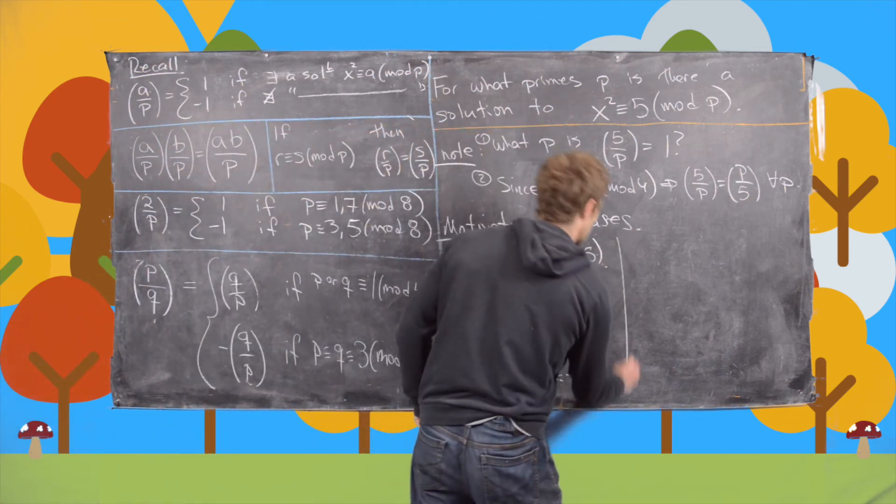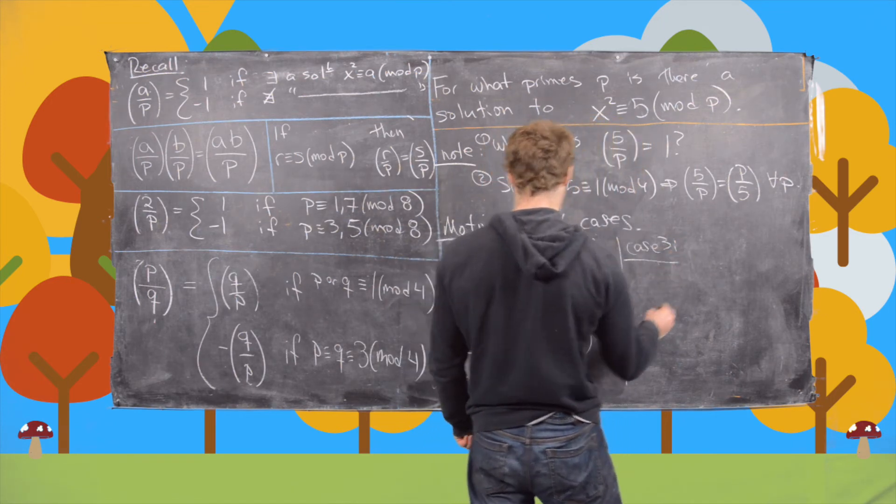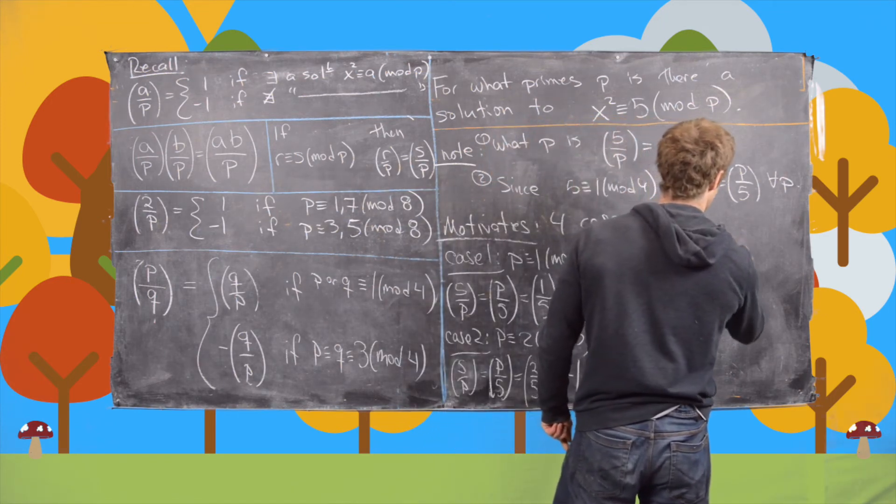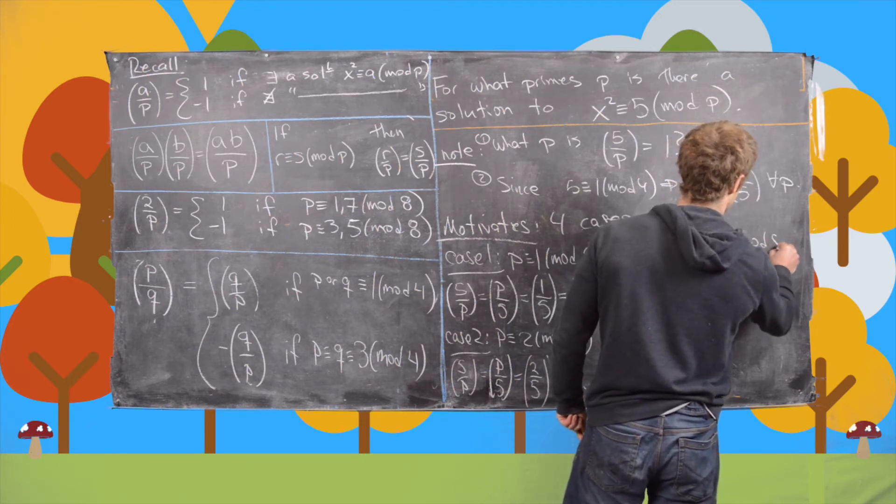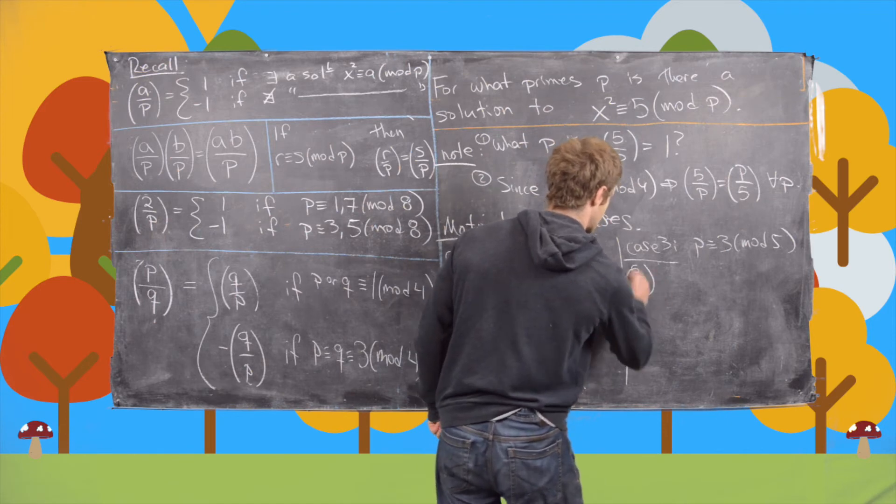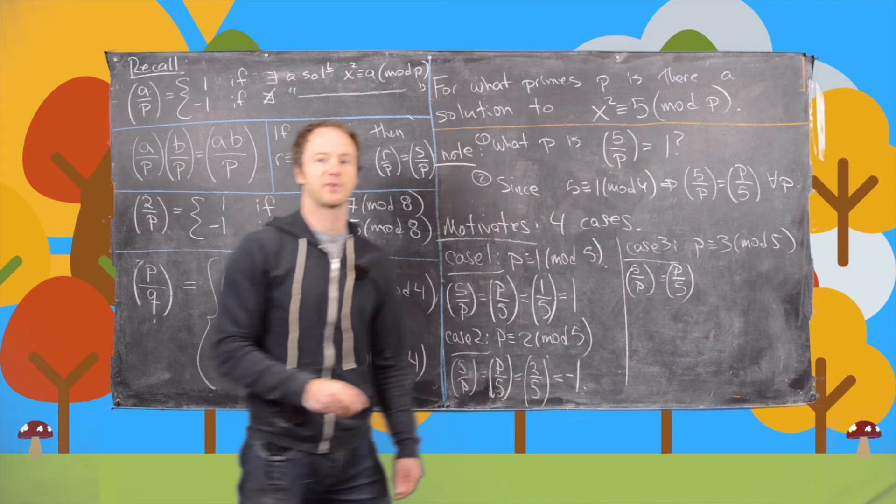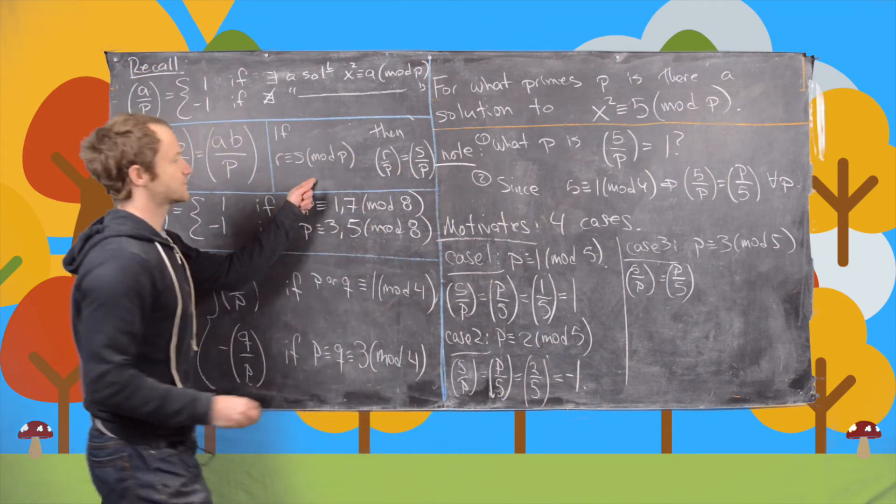Now let's look at case 3. So case 3 will be p is congruent to 3 mod 5. So here we have 5 by p is the same thing as p by 5, again by quadratic reciprocity.